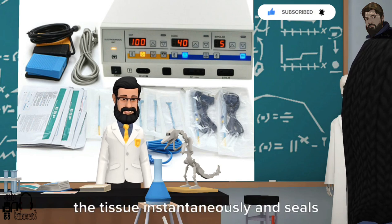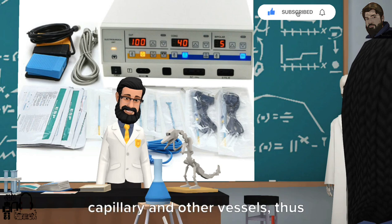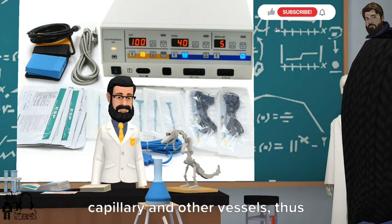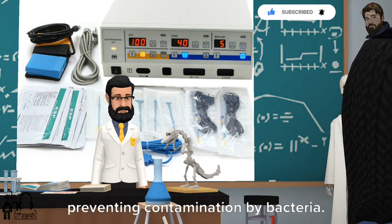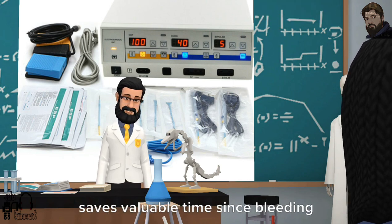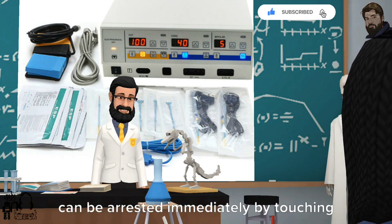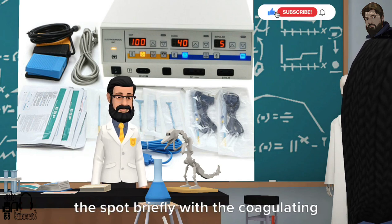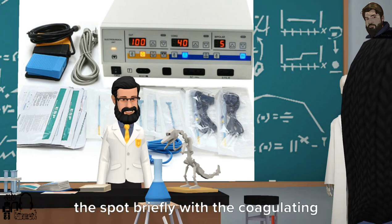The electrode virtually melts through the tissue instantaneously and seals capillary and other vessels, thus preventing contamination by bacteria. A simplified method of coagulation saves valuable time since bleeding can be arrested immediately by touching the spot briefly with the coagulating electrode.